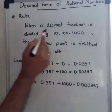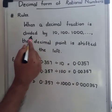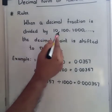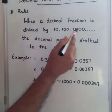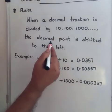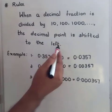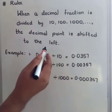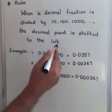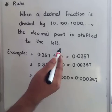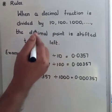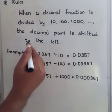The second rule: when a decimal fraction is divided by 10, 100, or 1000, the decimal point is shifted to the left. In multiplication it was to the right, and in division it is to the left.